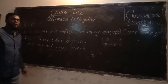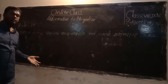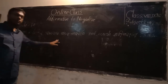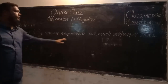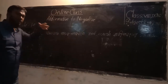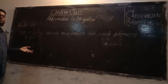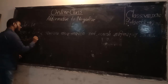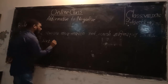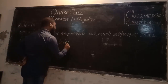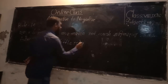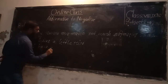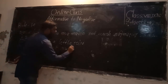Rule number fourteen. If we find the words 'a little' in a sentence, we replace it with 'not much,' and the rest of the sentence stays the same when converting from affirmative to negative. For example: 'I have a little rice.' The answer will be: 'I have not much rice.'